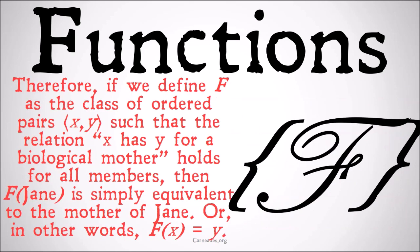Therefore, if we define f as the class of ordered pairs (x,y) such that the relation 'x has y for a biological mother' holds for all members, then f(Jane) is simply equivalent to the mother of Jane. It identifies one individual. But if we had switched that around, Jane's mother might have multiple children, and so the child of someone isn't going to be a function because it maps onto multiple people. Or in other words, f(x) = y.